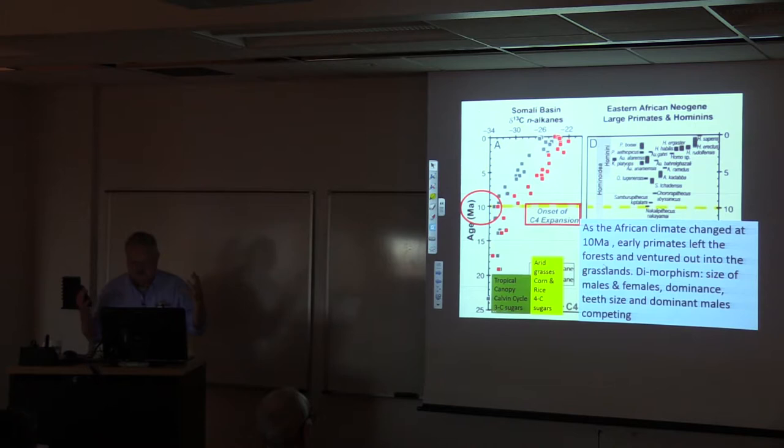As that African climate changed at about 10 million years, early primates left the forest apparently. This is all based on fossil evidence. Ventured out into the grasslands. Really interesting happened. Anthropologists study something called dimorphism. If you look at a species like a gorilla, the males tend to be really big compared to the females. The males have big canine teeth. The reason is they're involved in ferocious dominance battles to be the dominant male. Over time, anthropologists noticed in early hominids that dimorphism disappeared. Today, humans are not dimorphic.